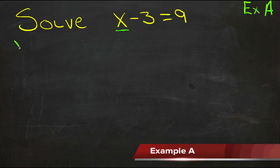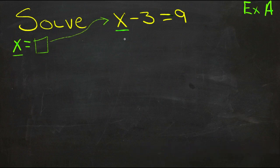When we're done, it should look like x, or whatever other variable we have, equals some number. Then we know what number x would be the same as, and what number we could put back into our original equation that would make the statement true.